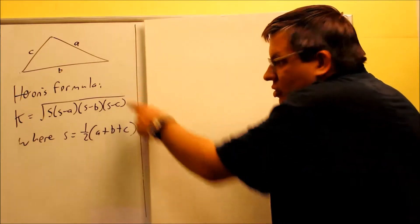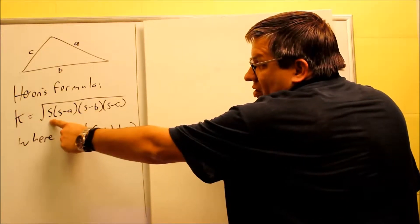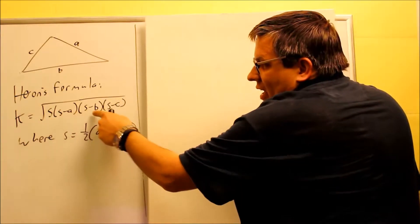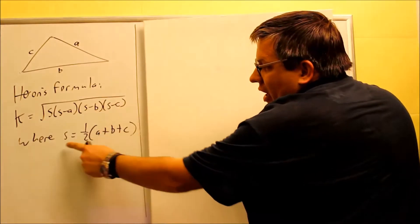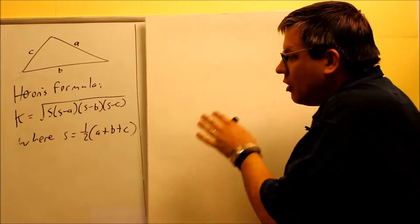We want to come up with a formula for the area. We're going to use Heron's formula here, and Heron's formula is given as the square root: this is s, s minus a, s minus b, s minus c.